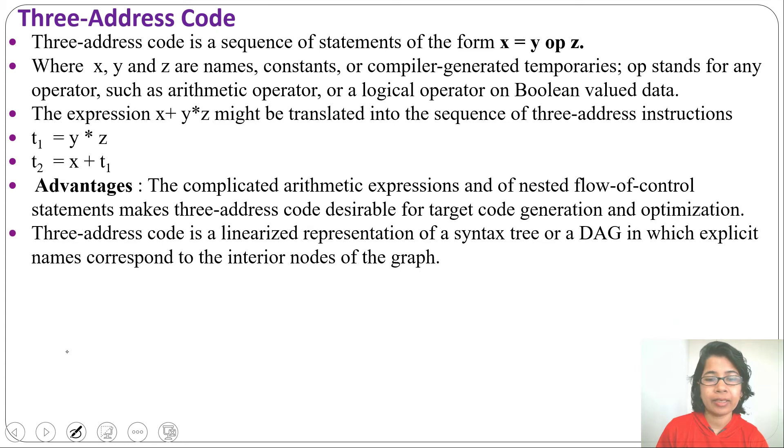Three-address code is a linear representation of syntax tree or a DAG. Syntax tree and DAG are nonlinear representations, while three-address code is a linear representation in which explicit names correspond to interior nodes. Explicit names means compiler-generated temporaries, so compiler-generated temporaries stand for interior nodes of the graph.